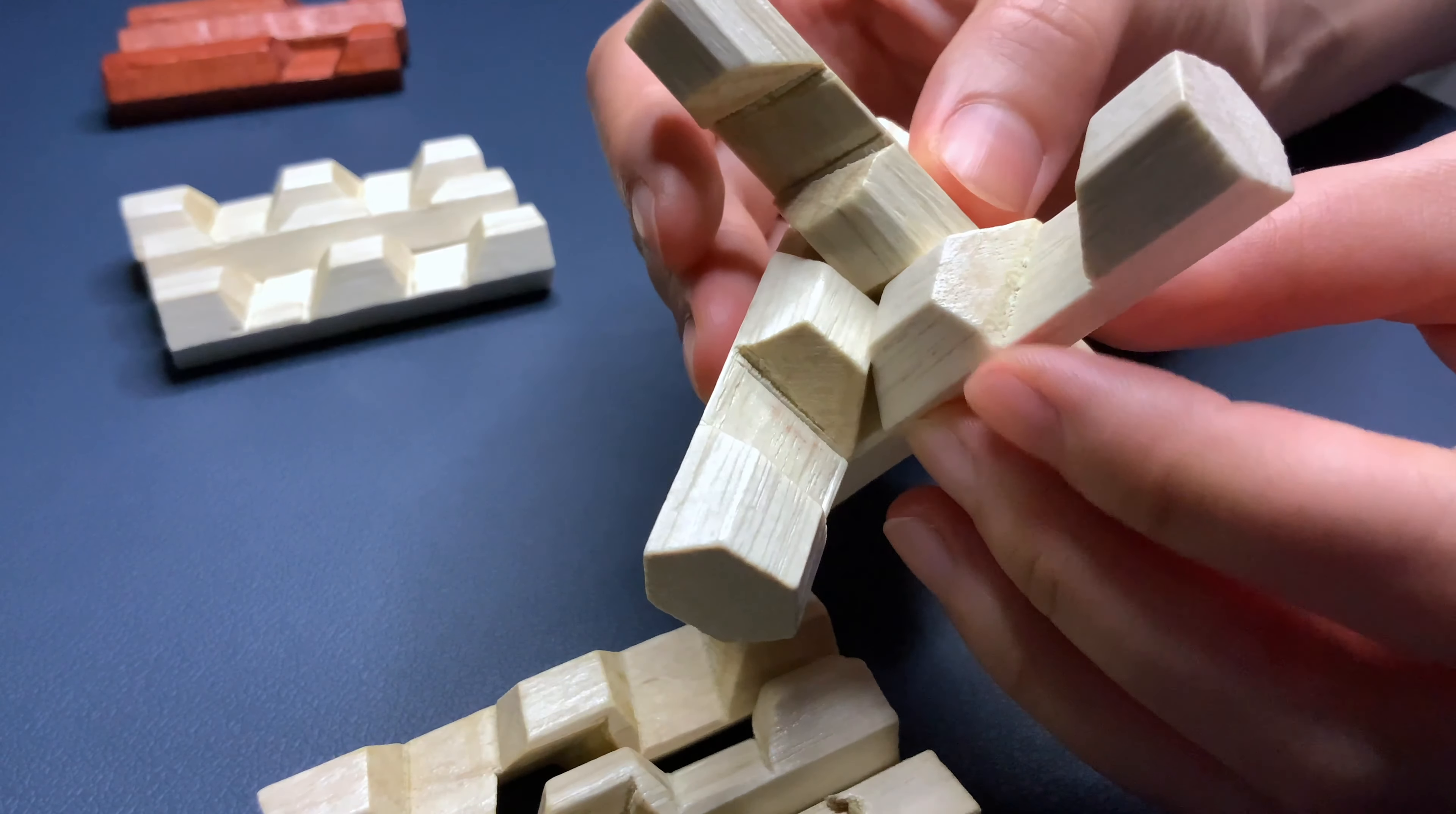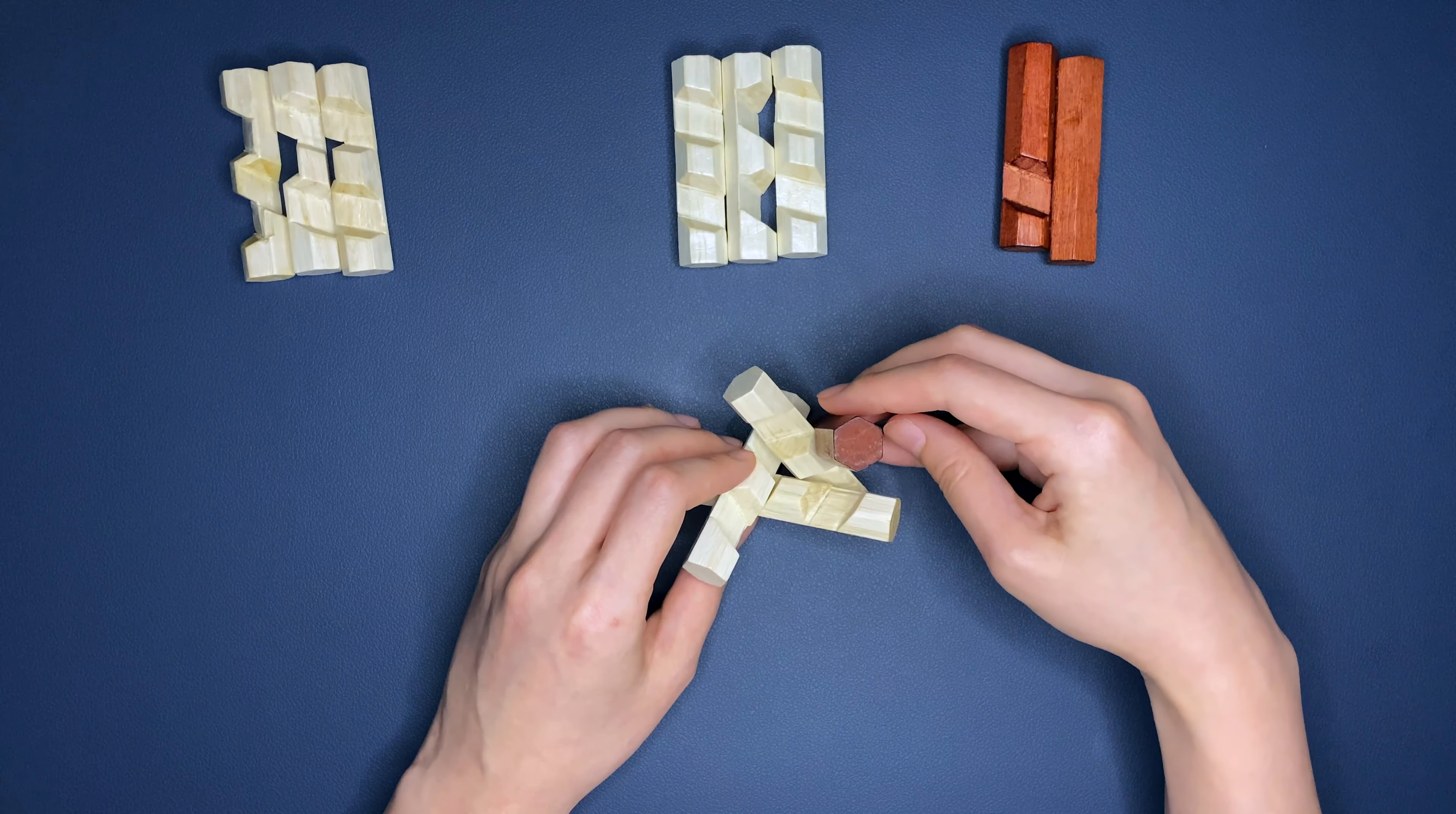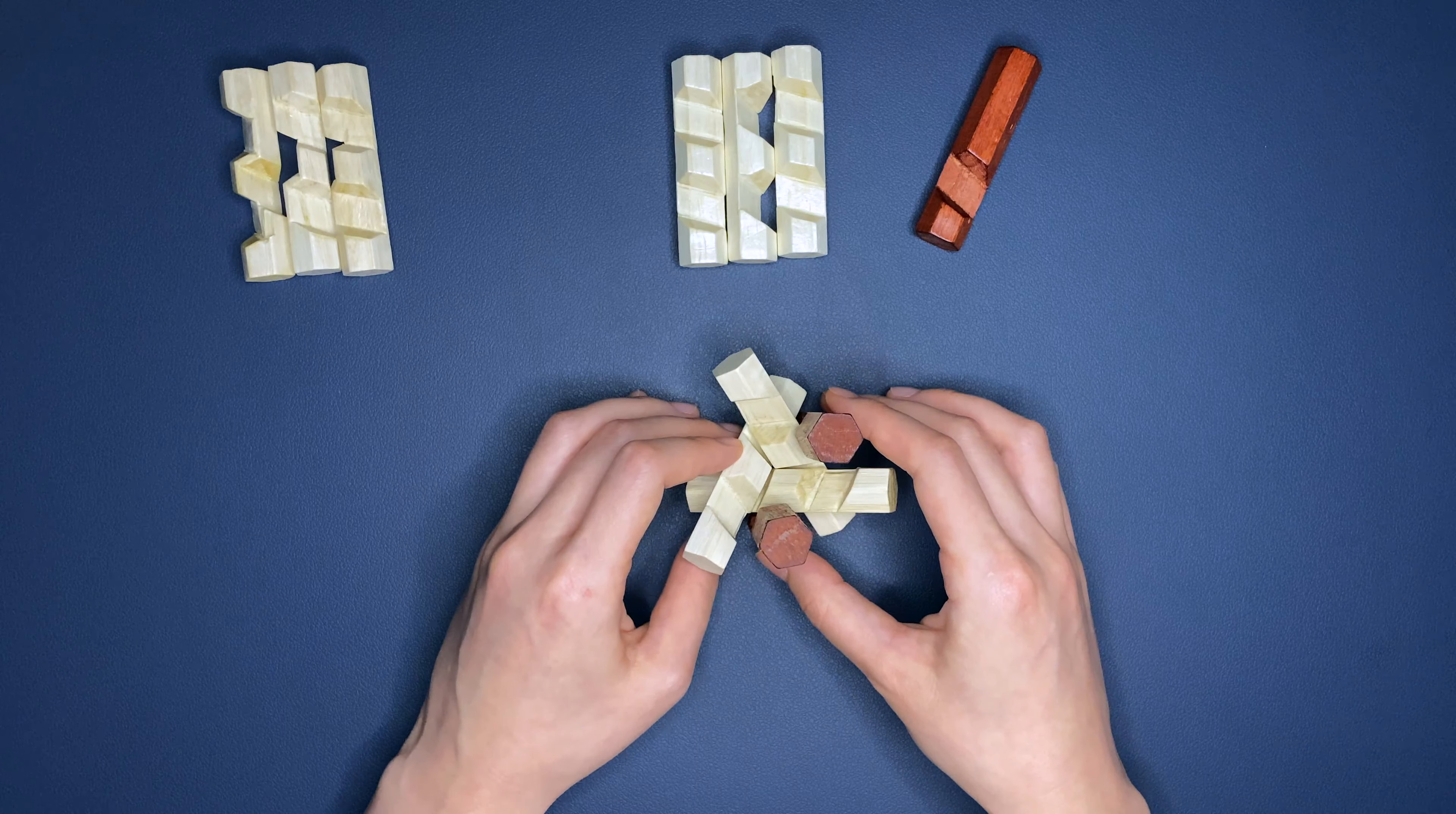You align the middle part between the two carve outs. And then you take the wooden piece, the carve out at the bottom, and match it with the existing three pieces that are already standing there, like this.